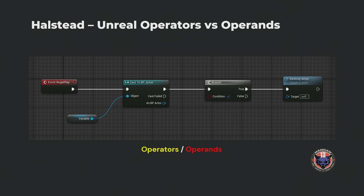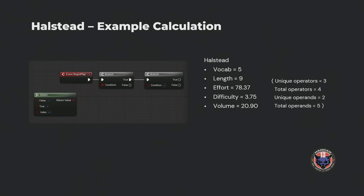How do you do this in Unreal? Very simple. What are the operators? You literally count the number of nodes — one, two, three, four nodes. The operands are what these nodes are processing: this takes a variable, that's the first operand; the branch takes a condition, that's the second; the destroy actor has a variable like target, that's the third. Here's another quick example: four nodes, but only three are unique because the branch repeats itself. You plug it in, you get an effort of 78, a difficulty of 3, and a volume of 20. It kind of matches intuitively — very simple graph, difficulty 3.